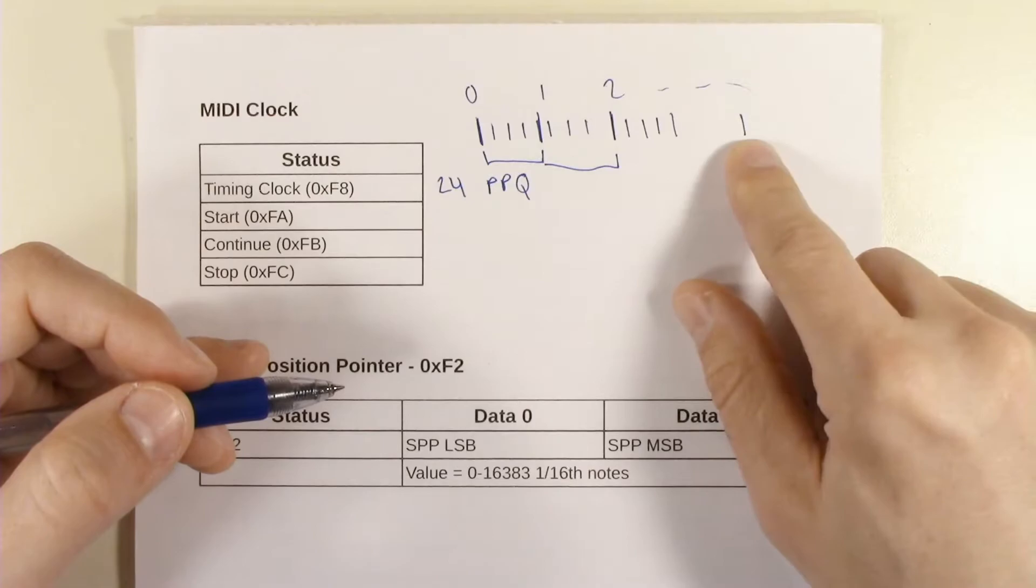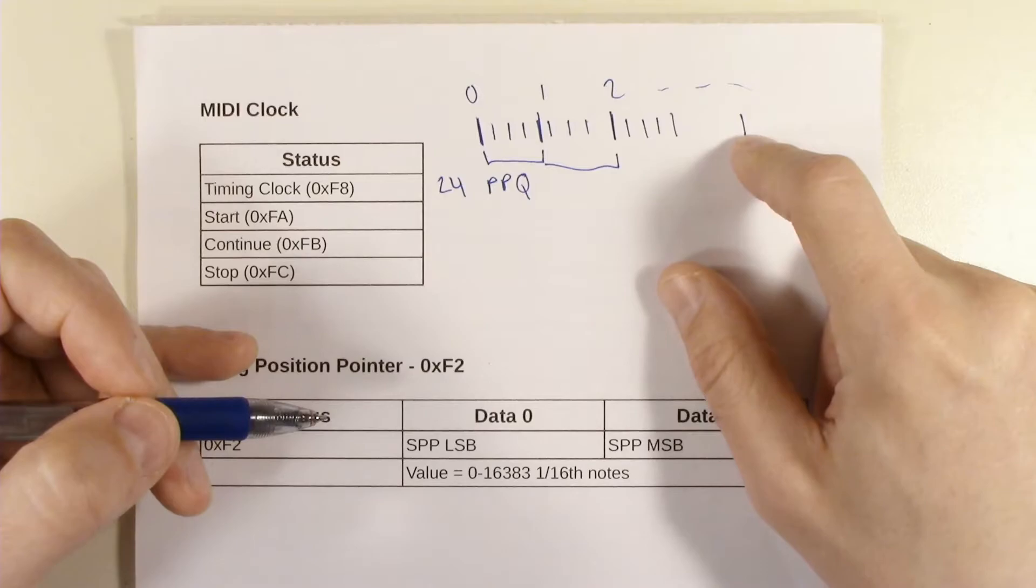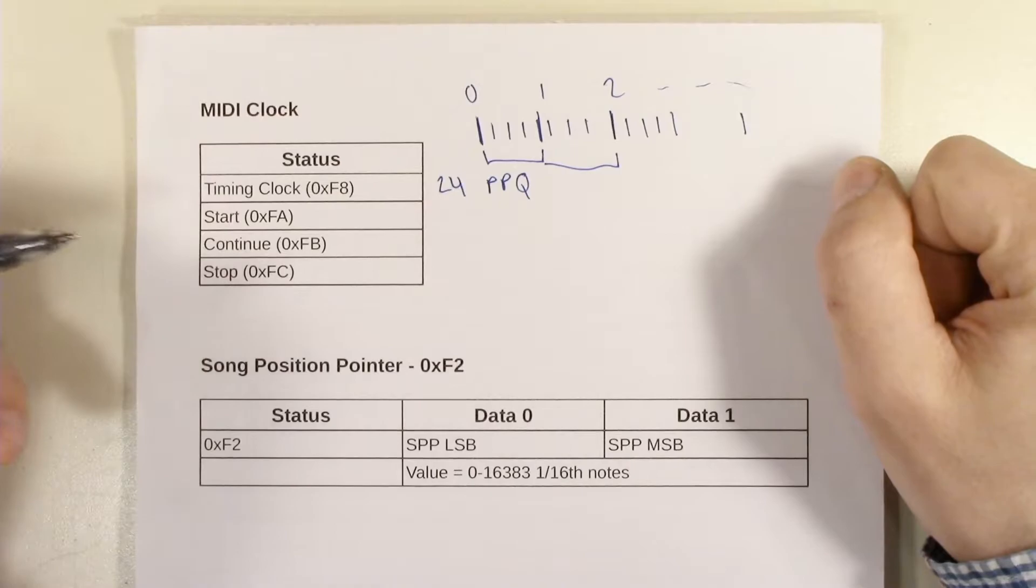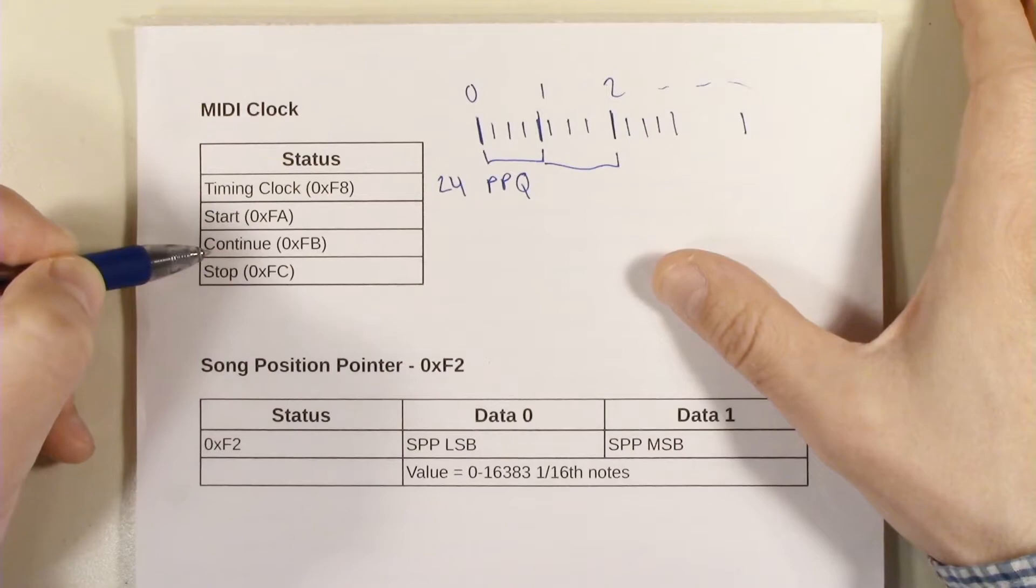Conversely stop means stop receiving clock pulses. So if you're in a stop state any of these pulses that come in might continue to keep your clock synchronized but they're not going to actually cause the sequencer to advance at all.